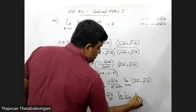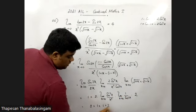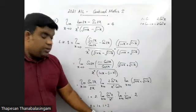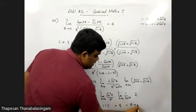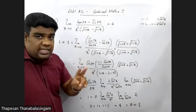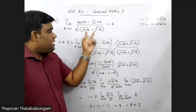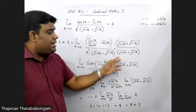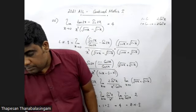x is 0 over 1 plus 1, 2 into 1, 2. 1 cos 0, 1 over 1 into 2. x is equal to 1.